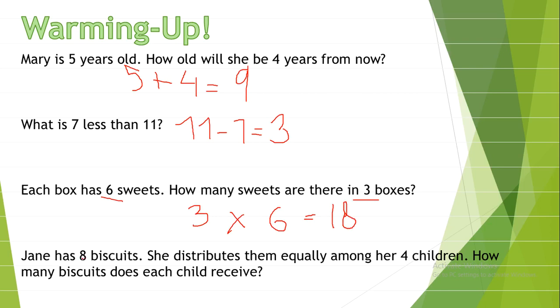Jane has 8 biscuits. She distributes them equally among her 4 children. How many biscuits does each child receive? So, 8 divided by 4 equals 2.